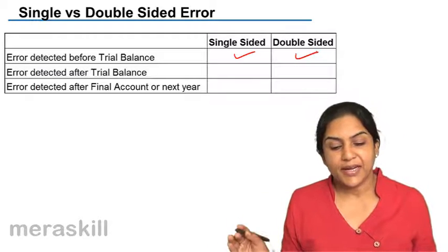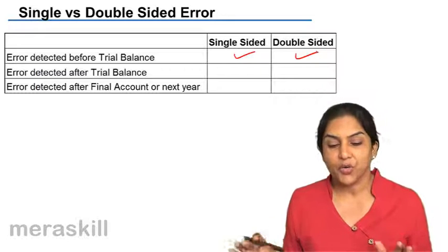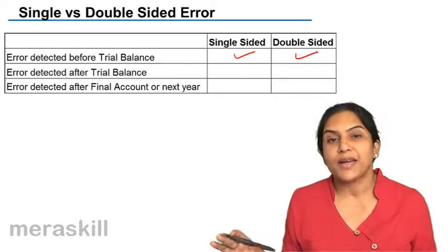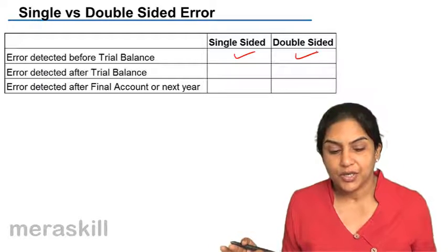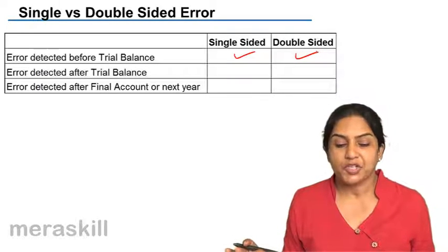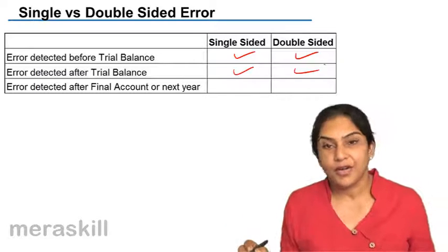Errors we may detect after the trial balance - if not in a position to detect the error at that point in time, we go ahead to finalize the accounts and prepare a profit and loss and balance sheet. In this case, after preparation of the trial balance also, the errors may be single-sided or double-sided.